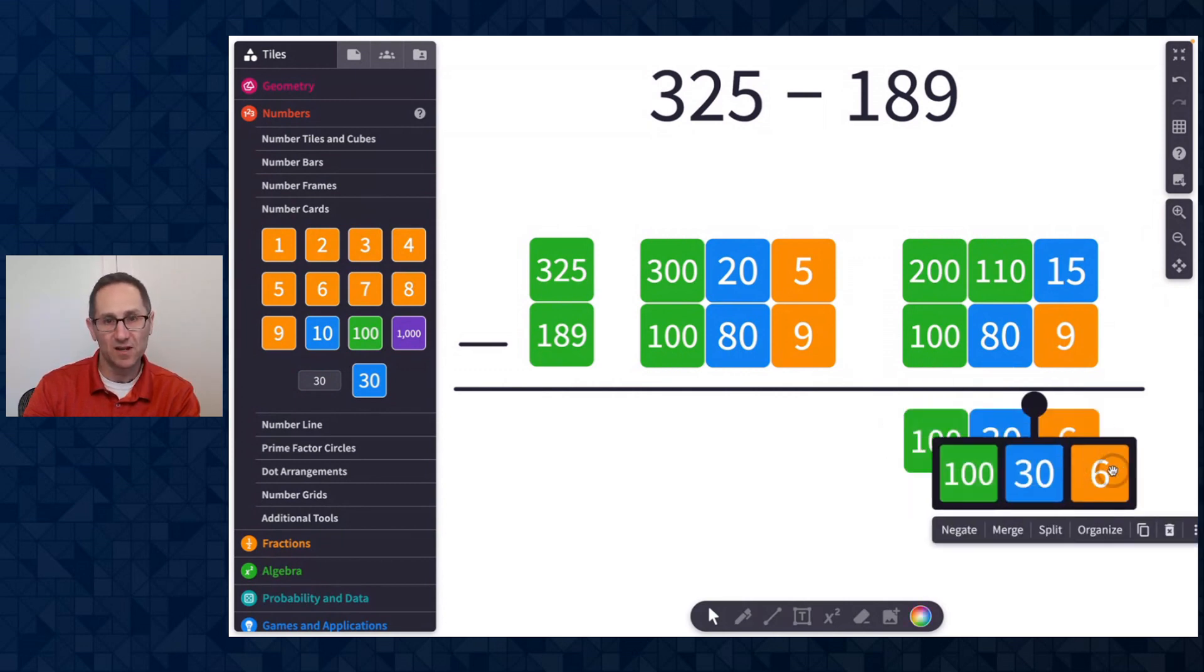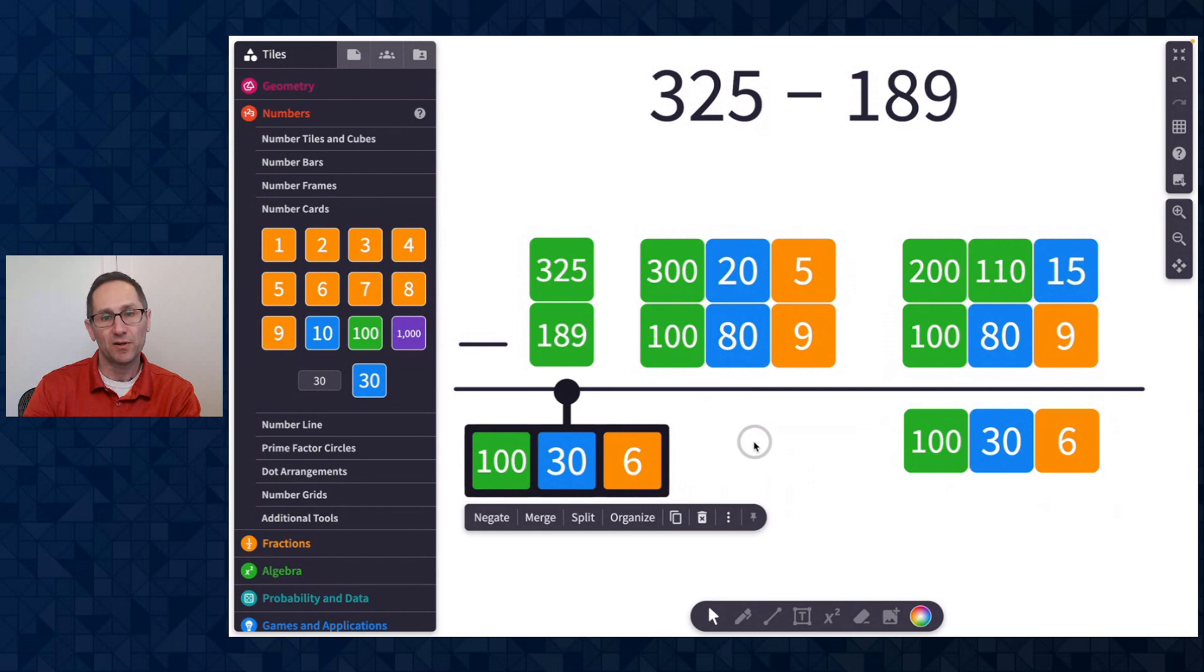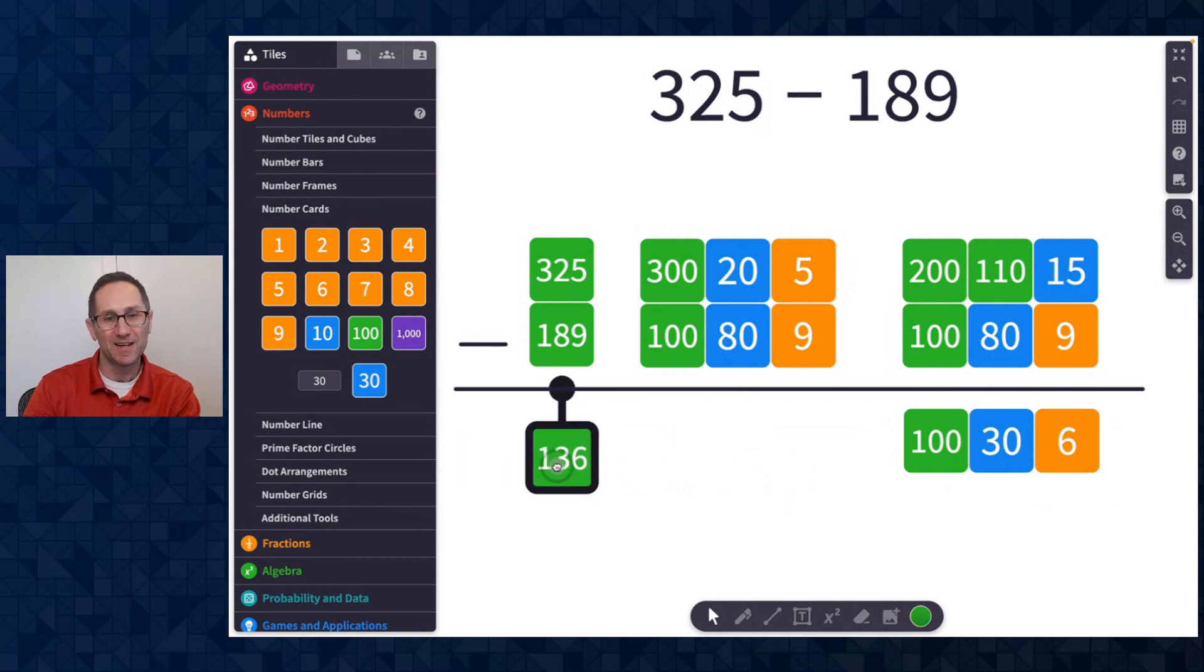I'm going to select all of these, copy them, put it over here, merge those together to get 136. How lovely is that? So that is one way to use the number cards to show and represent what is happening as I split the 20 into the two 10s, took one of the 10s and put it on the 5 to make 15, and then did that with the 300 as well.